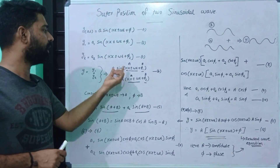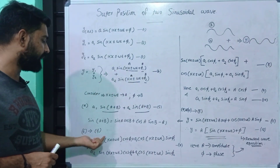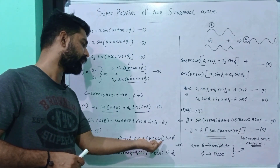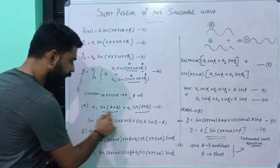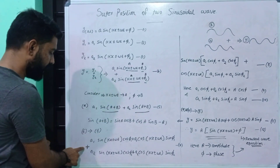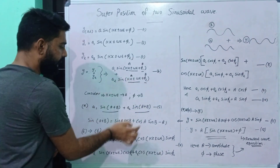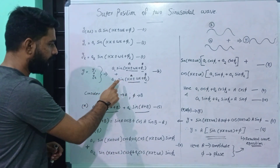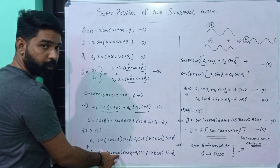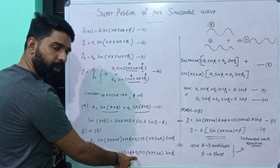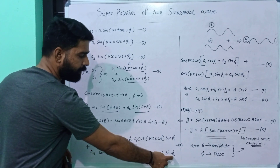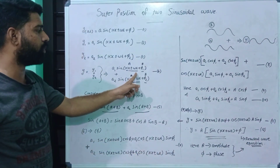We factor out A1 as common. So A1 sin(kx ± ωt) cos φ plus A1 cos(kx ± ωt) sin φ. Then we substitute the identity again for the A2 term. A2 is common, giving A2 sin(kx ± ωt) cos φ2 plus A2 cos(kx ± ωt) sin φ2. This is equation 7.